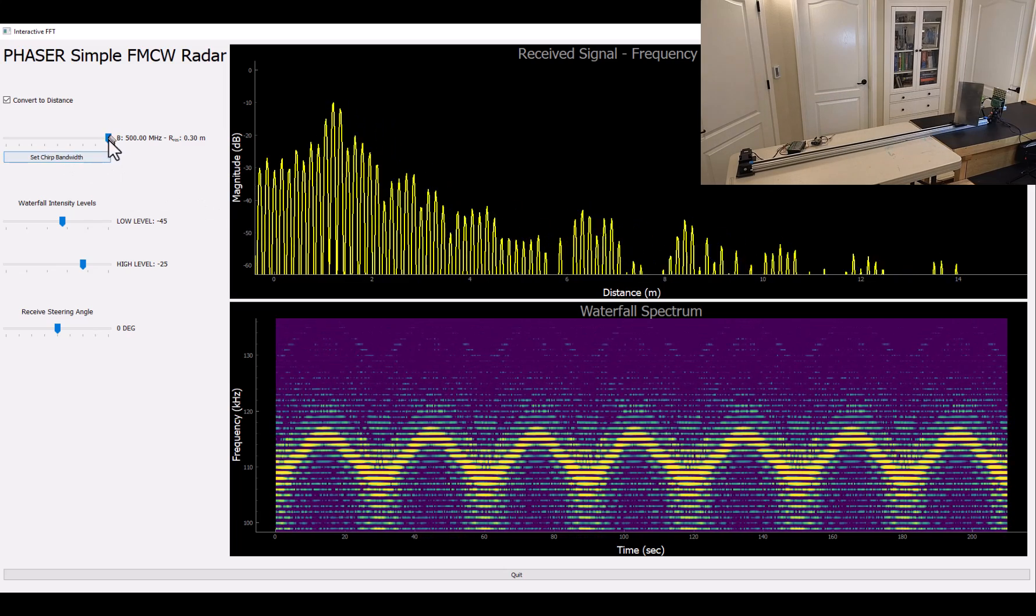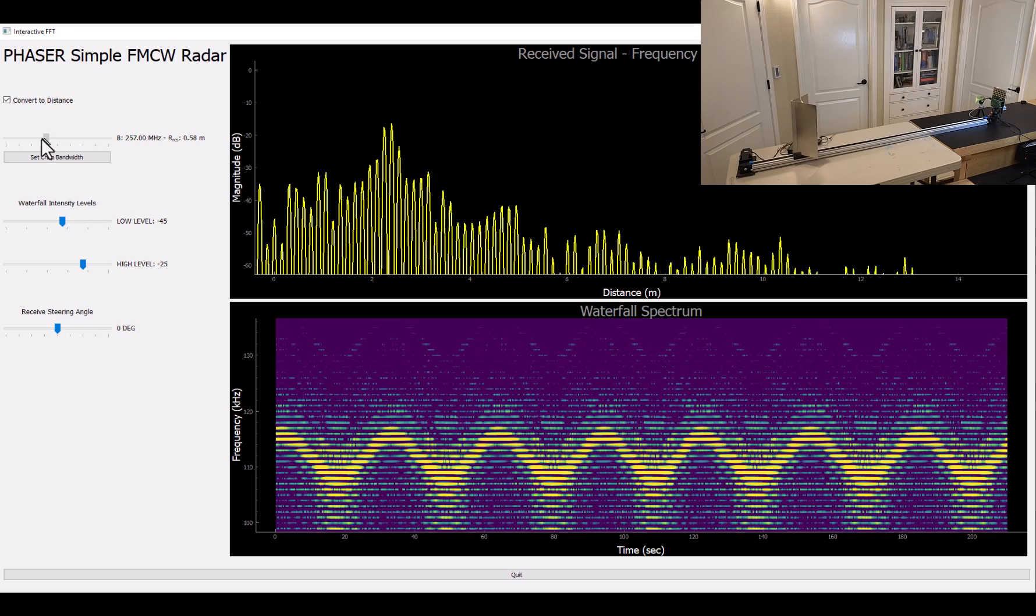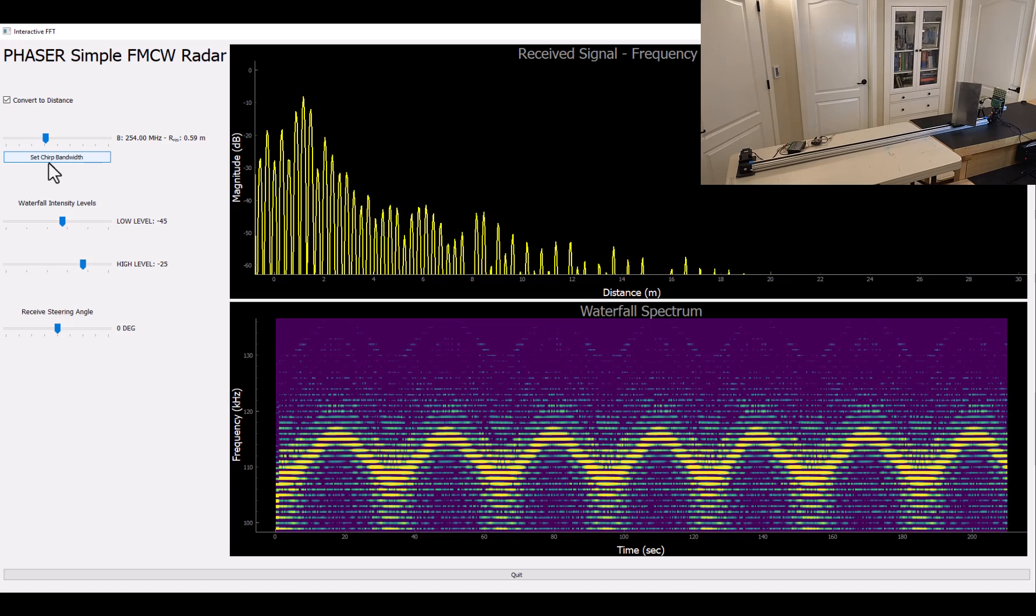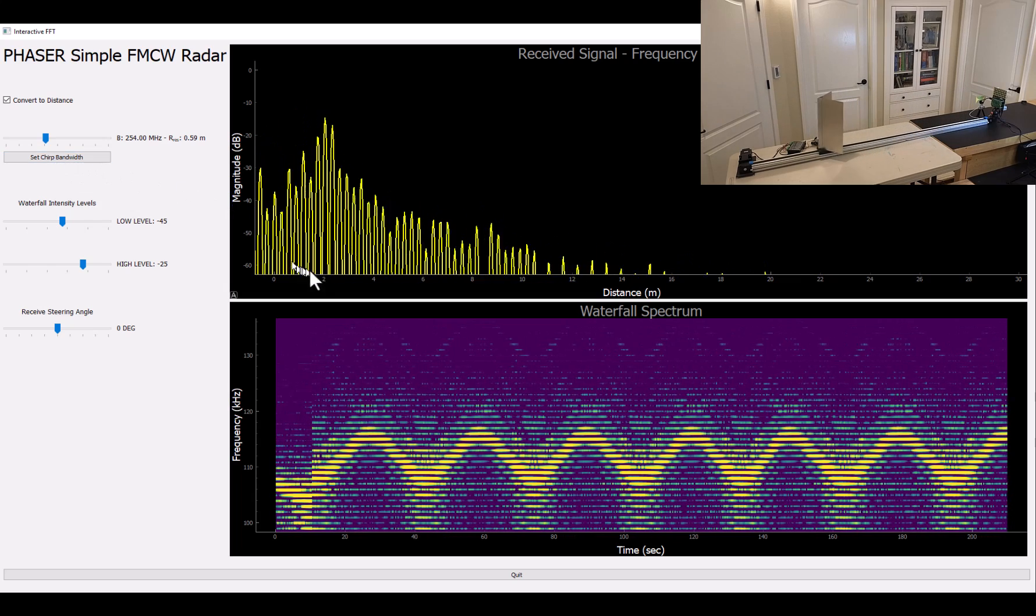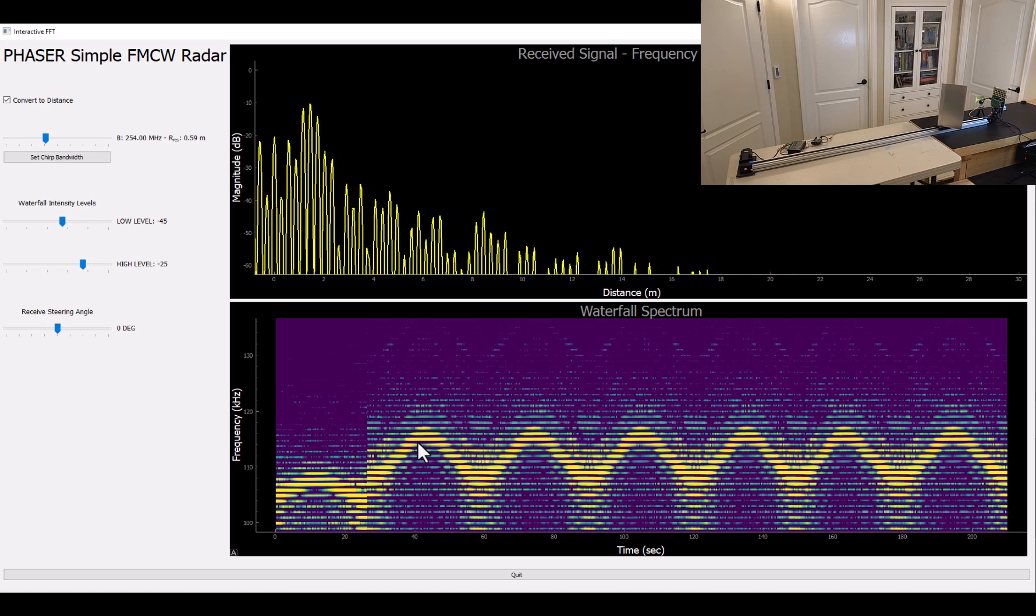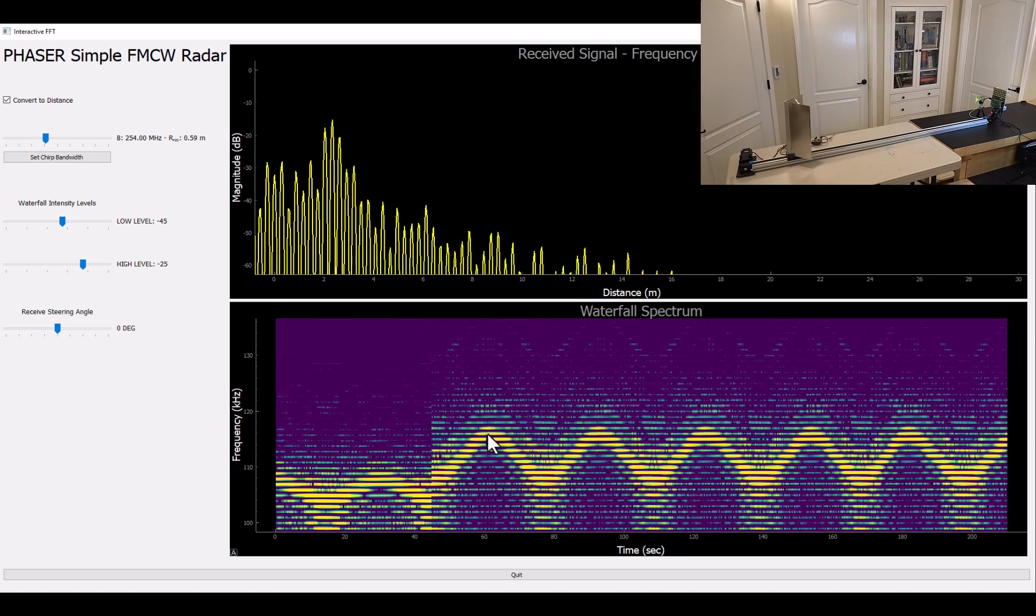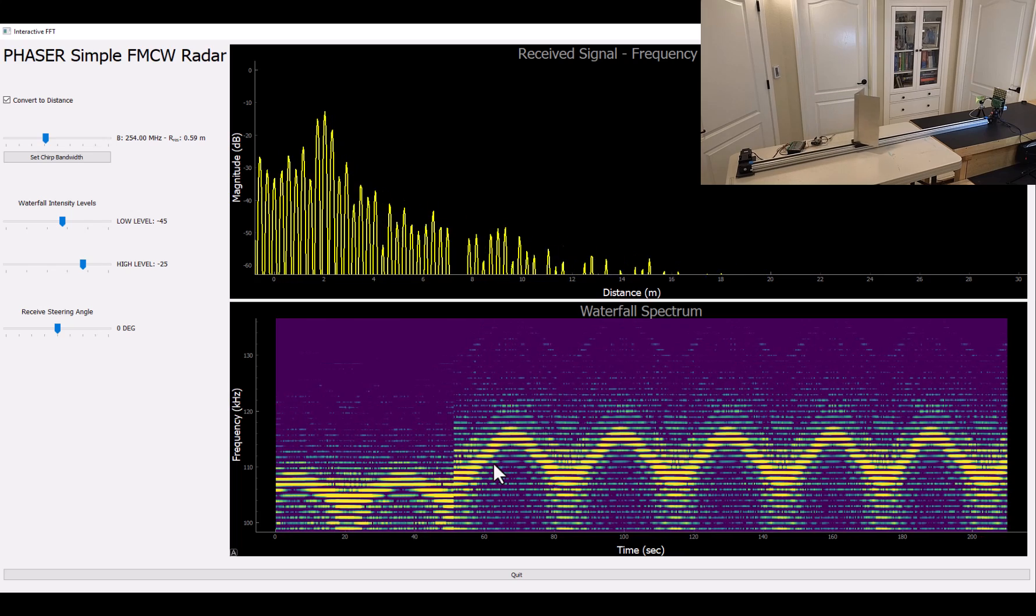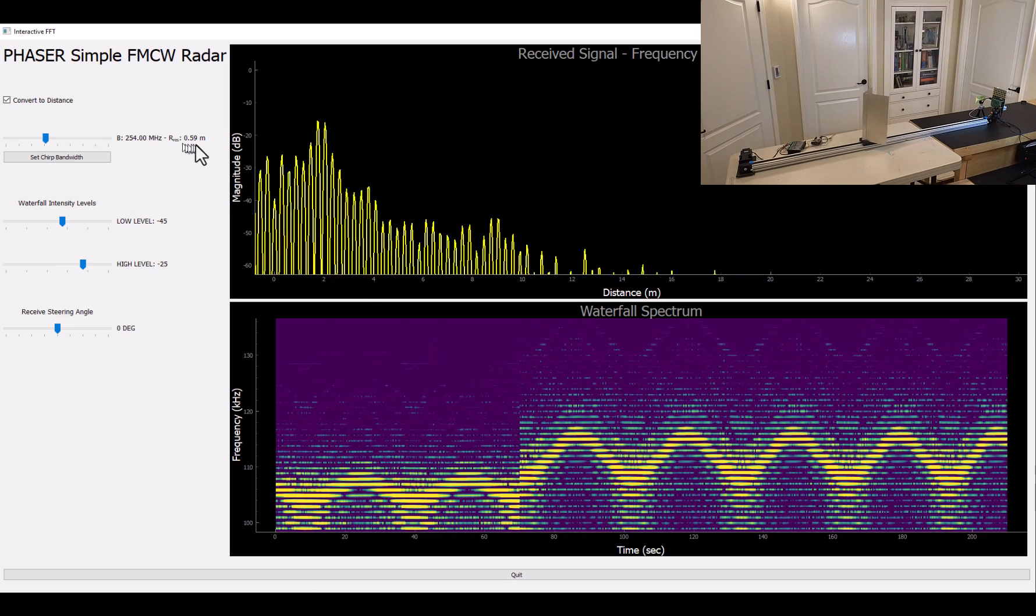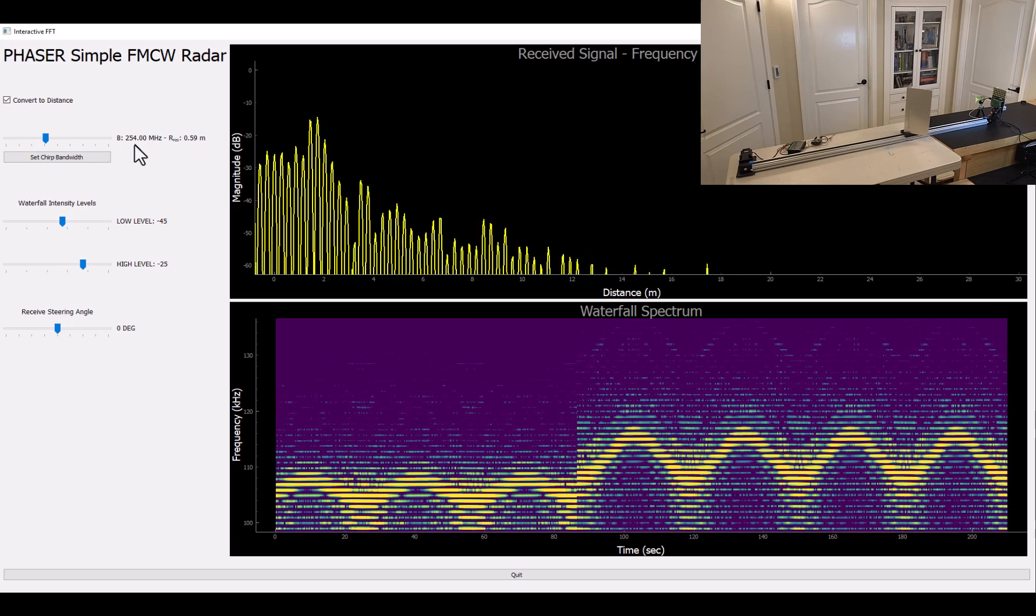And I can change the chirp bandwidth. So right now we're at 500 megahertz. But if we go to half of that, let's go to something around 250 megahertz. And now we change that. And we see that instantly our beat frequencies get divided in half. So the low point is now halfway closer to 100 kilohertz. And so is the high point here. So this is an indication, we're losing that range resolution by using a 250 megahertz chirp instead of a 500 megahertz chirp.